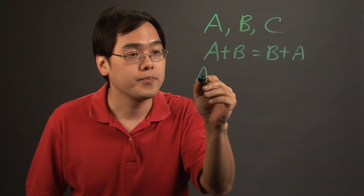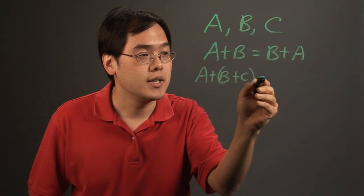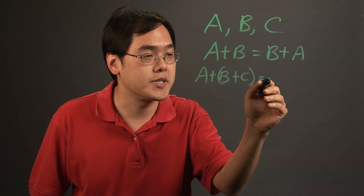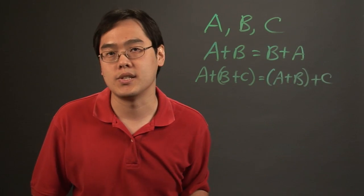Now with associative, you can think of A plus B plus C. That's going to equal where B plus C is in parentheses, which equals A plus B in parentheses plus C as well.